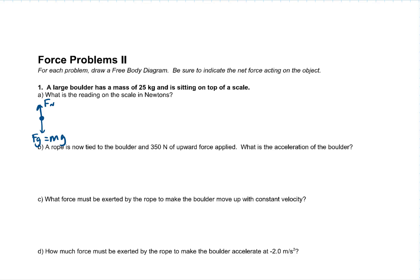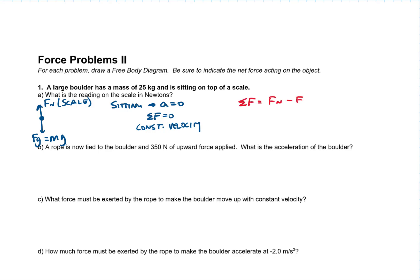From this free body diagram, the normal force is the scale reading. Sitting means the acceleration is zero, which means the net force is zero — constant velocity, in this case zero. The net force is the up force minus the down force: normal force minus force of gravity. So zero equals the scale reading minus 25 times 10, which is 250. Therefore, the normal force and the scale reading is 250 newtons.